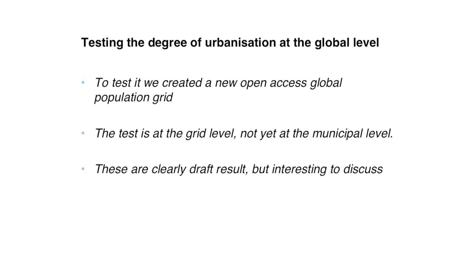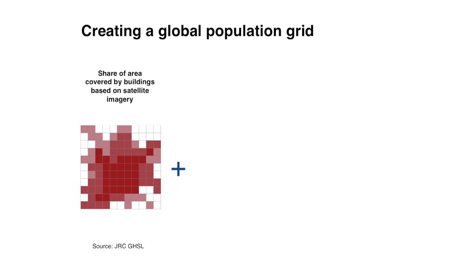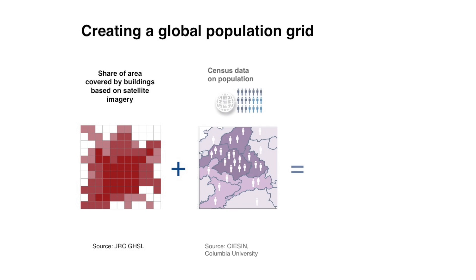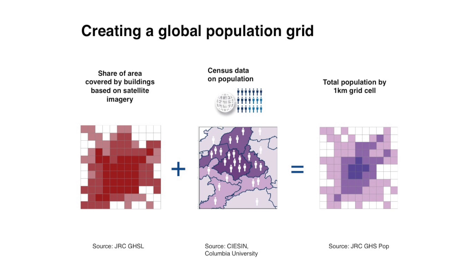Comparing this at the global level is harder. We first had to create a new open-access global population grid, and we've only been able to test it up to the grid level — we haven't been able to match these three grid concepts with the municipalities. The results are only draft and can still be improved, but I think the results are already very interesting. Using satellite imagery, we tried to detect every single building in the world. For each little grid cell, we decided how much of that land was covered by buildings. Then from census data, we got population for little administrative areas, and by combining this with the built-up area, we were able to create a population grid. To put it simply, we took the people, put them in a building, and we have a population grid.